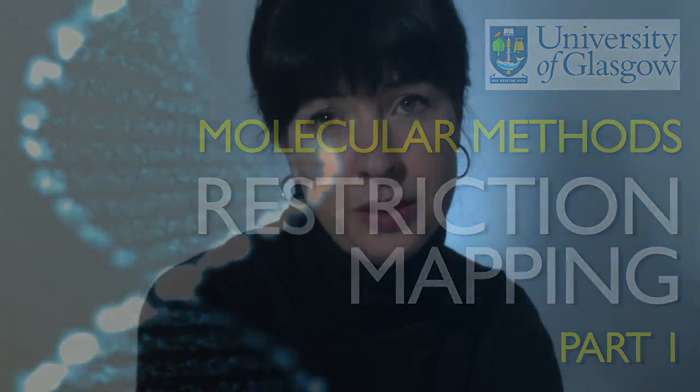Restriction mapping is looking at how a piece of DNA is digested or chopped up into smaller fragments by restriction endonucleases. You'll also see them called restriction enzymes. In the examples that we're going to be looking at, the DNA happens to be a circular piece of DNA, a plasmid. So it's circular and it's double-stranded. Now, restriction enzymes have very specific sites at which they can cut at.